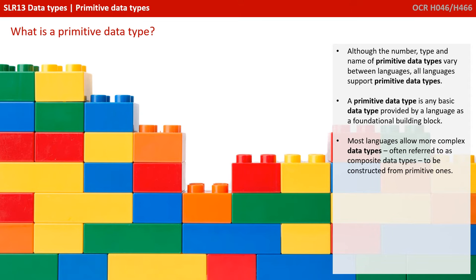A primitive data type is any basic data type provided by a language as a foundational building block. Most languages allow more complex data types, often referred to as composite data types, to be constructed from the primitive ones.